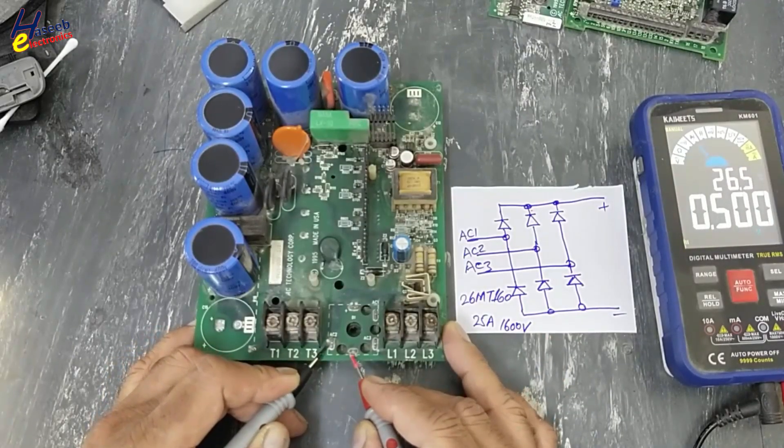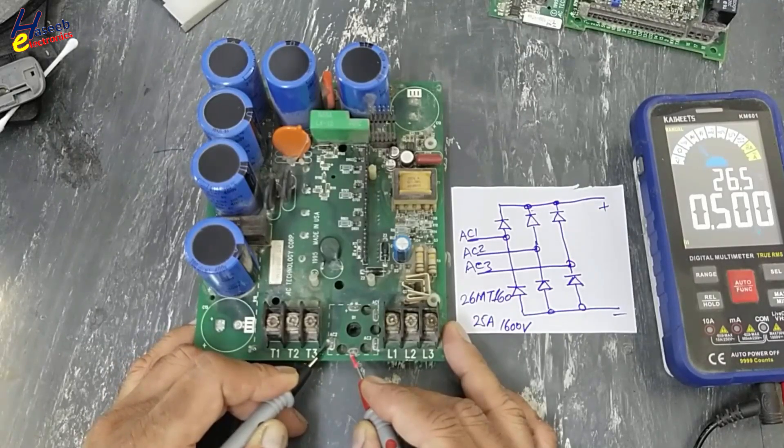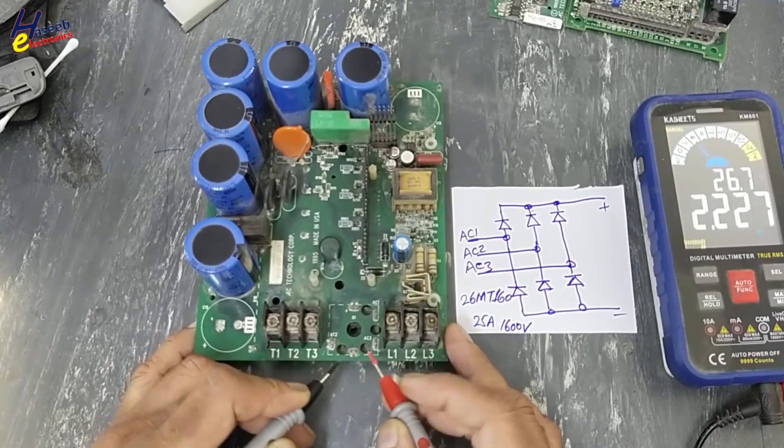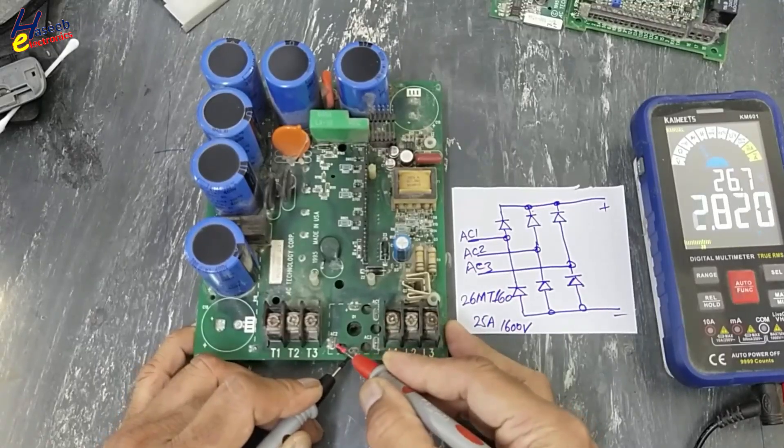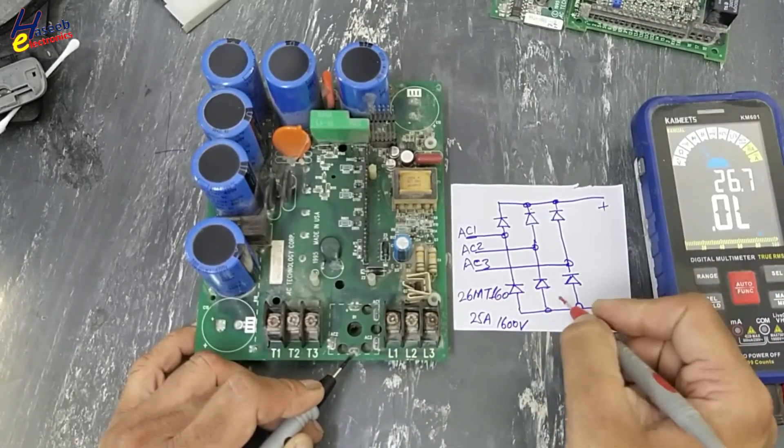If you find continuity between any one terminal, for example here is 0.5 forward voltage, if you find beep or zero ohm resistance in this condition and same in this condition, that will indicate the diode is short circuited.